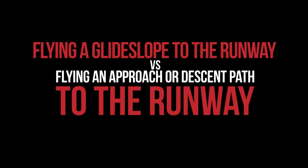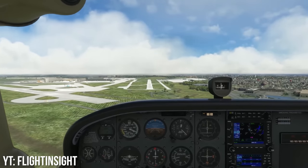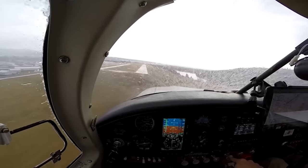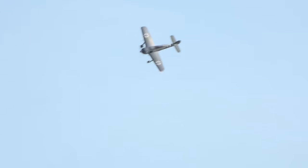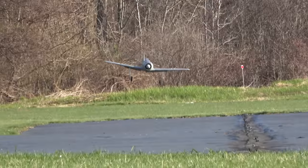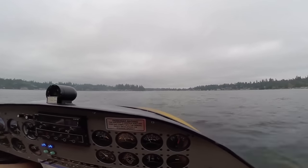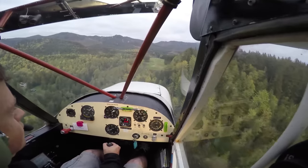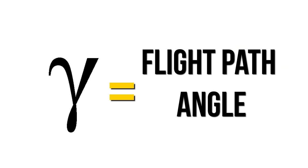Flying a glide slope to the runway versus flying an approach or descent path to the runway. To clear the air, a glide slope is an electronically broadcasted signal received by a full-scale airplane, displayed on an instrument in the cockpit to fly an approach through the clouds to land in bad weather. RC planes do not have the capability to receive a glide slope signal. Rather, the proper way to reference the direction you're moving through the air relative to the ground would be your approach or descent path, also referred to as gamma, flight path angle, or flight path vector.